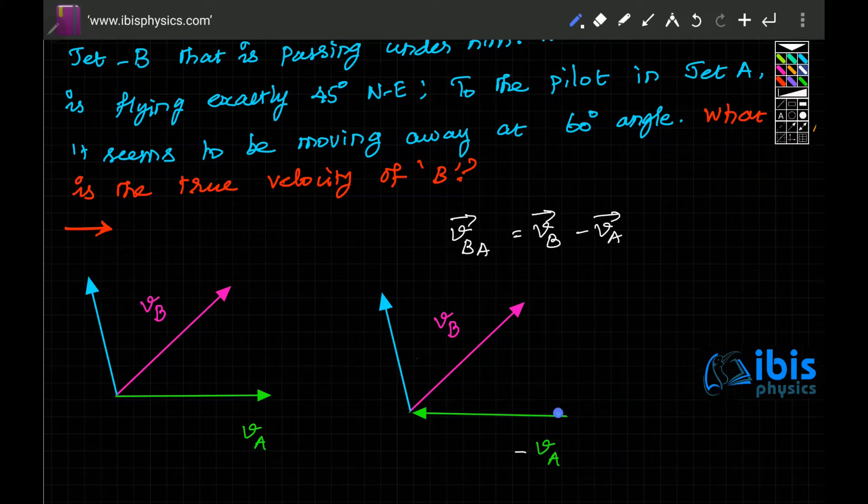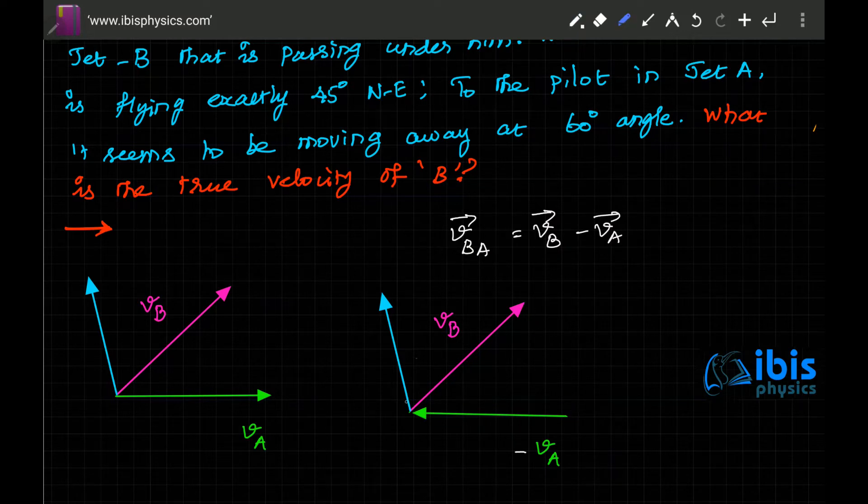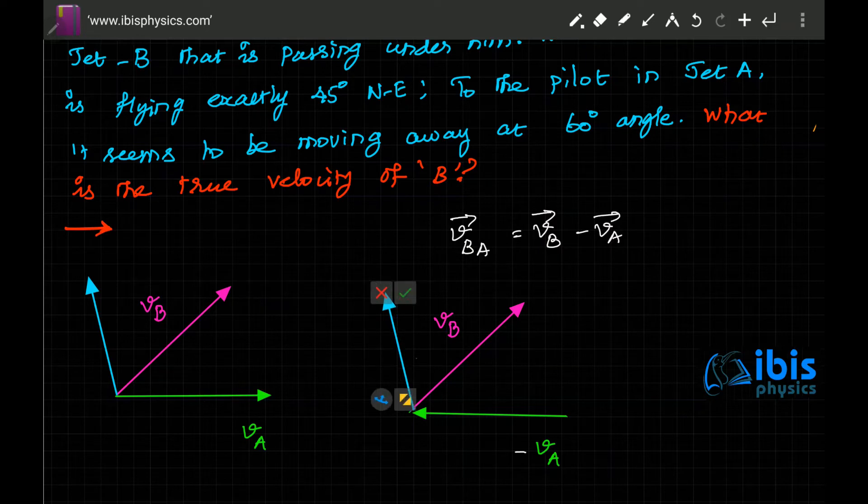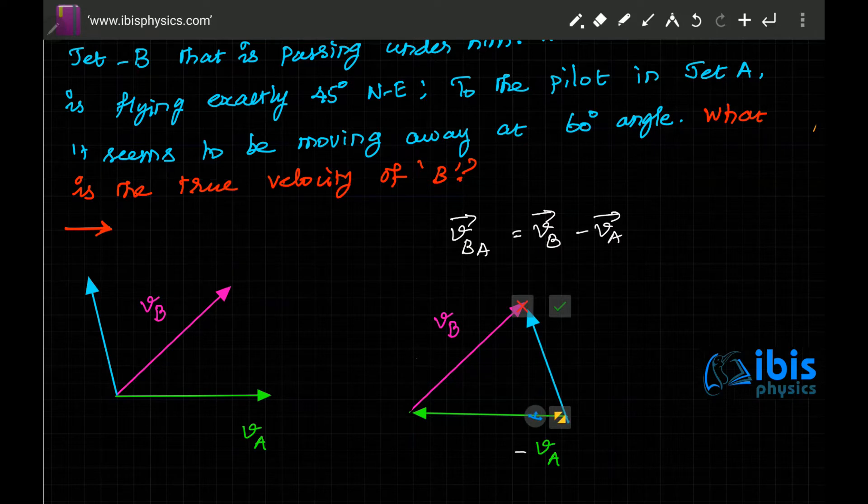Now VB minus VA means from the tail of this to the head of this. This is velocity as observed by A. So this is VBA, the velocity of B with respect to A.